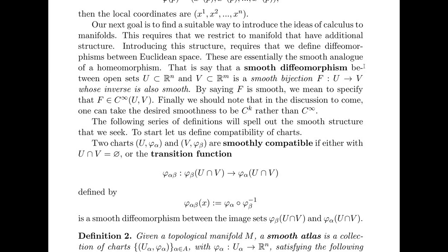We say that a smooth diffeomorphism between open sets U in R^n and V in R^m is a bijection, a smooth bijection from U to V, whose inverse is also smooth. By saying that F is smooth, what we mean to say is that F is in C^∞(U,V). We should also note that this discussion could completely take place under the assumptions of C^k differentiability rather than C^∞.